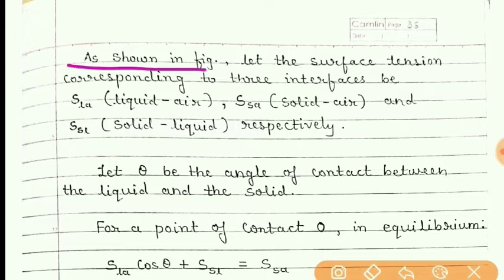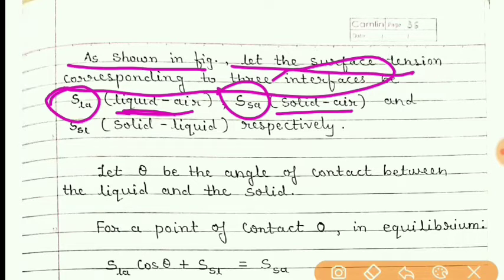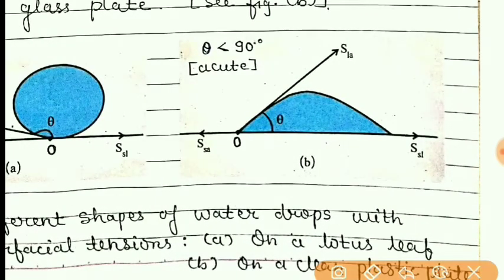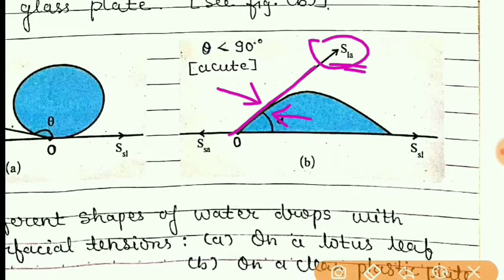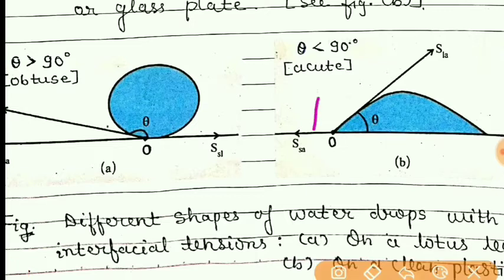Let the surface tension corresponding to the three interfaces be noted. The three interfaces are: liquid-air interface, solid-liquid interface, and solid-air interface. For the liquid-air line, on one side there is liquid and the other side there is air. The solid-liquid line has liquid on one side and solid on the other. The solid-air line has air on one side and the solid surface on the other.